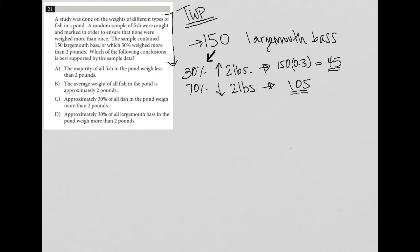Let's try the answer choices. Choice A: the majority of all fish in the pond weigh less than two pounds. Well, that's definitely true. I like that off the bat - it's very difficult for it to not be the right answer. But let's try the other ones just to make sure.